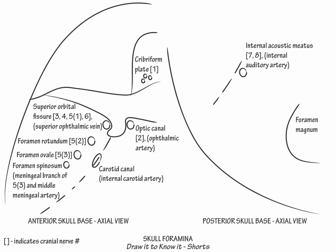Next, below the internal acoustic meatus, draw the jugular foramen. Show that cranial nerves 9, 10, and 11 pass through it, along with the internal jugular vein.